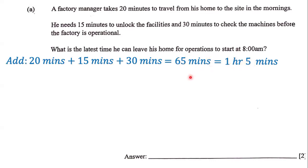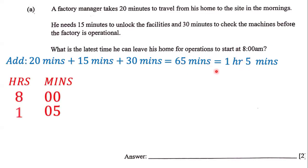What we have to do is subtract. So we're going to take eight o'clock, which is eight hours and zero minutes, and we're going to subtract one hour and five minutes. Let's perform the subtraction. Zero minutes.